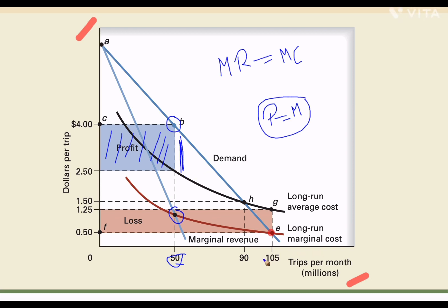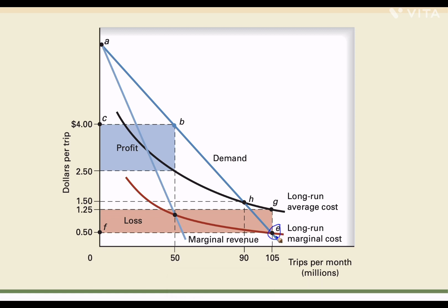A regulatory body could ask the firm to set its price equal to marginal cost. However, if the firm sets price equal to marginal cost and sells 105 trips per month, it incurs an average loss — depicted by the difference between the long-run average cost curve and the average revenue curve. That loss multiplied by total trips is the total loss, shown by the light orange shaded area. No profit-seeking firm would incur losses in the long run.